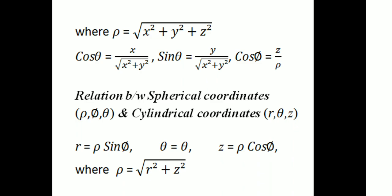The relation between spherical coordinates rho, phi, theta and cylindrical coordinates R, theta, z is: R equals rho sin phi, theta equals theta, and z equals rho cos phi. Where rho equals root of R squared plus z squared.